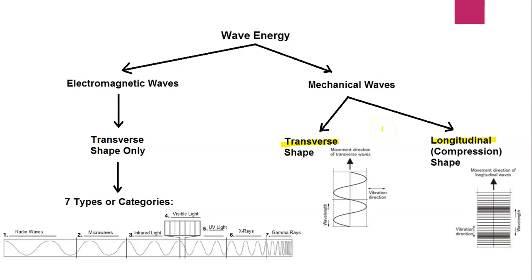What gives a longitudinal wave that compression-rarefaction look is that the molecules are disturbed parallel to the flow of energy. Sound is a really good example of mechanical waves. But what about the other type of wave energy? Remember, the purpose of wave energy is to get energy to go from one place to another. Electromagnetic wave energy is the other type — and they're transverse in shape only, and we can break them into seven categories.